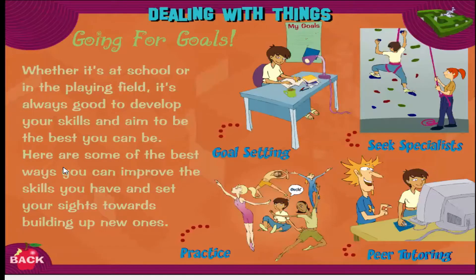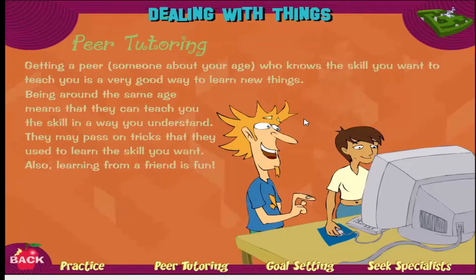When you're dealing with things and going for goals, whether it's at school or on the playing field, it's always good to develop your skills and aim to be the best you can possibly be. The first thing we're going to discuss is goal setting. Getting a peer — someone about your age like a buddy — who knows the skill you want to learn and wants to teach you is a very good way to learn new things. For example, Will may be better at one thing than Tony, and Tony may be better at something else, so the two of you can work together and teach each other new things.